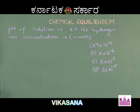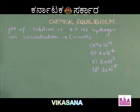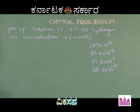I will read the problem for you. pH of a solution is 4.7. Its hydrogen ion concentration is: option A, 7×10⁻⁴; option B, 2×10⁻⁴; option C, 2×10⁻³; and option D, 2×10⁻⁴.